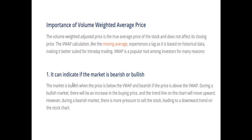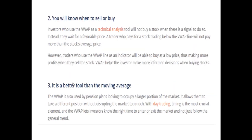It can indicate if the market is bearish or bullish. The market is bullish when the price is below the Volume Weighted Average Price, and bearish if the price is above the Volume Weighted Average Price. During a bullish market there will be an increase in the buying price and the trend line on the chart will move upward. During a bearish market there is more pressure to sell the stock, leading to a downward trend on the stock chart.